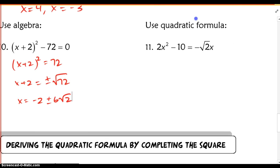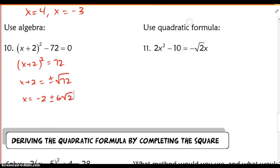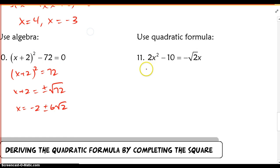And in number 11, I have here to use the quadratic formula. Now, the reason why here you're using the quadratic formula is if you were to rewrite this in your standard form here, your lead coefficient, A, is not 1. Okay?